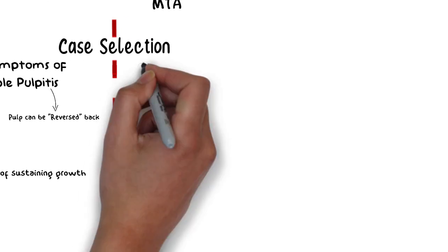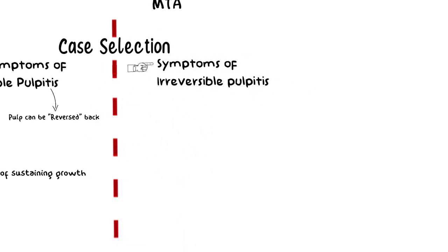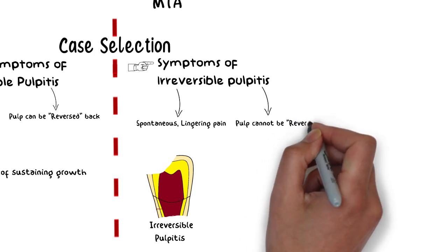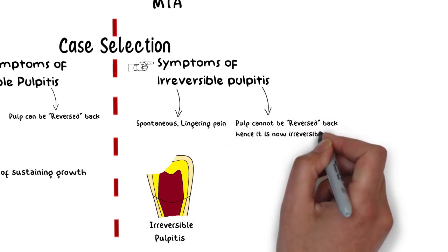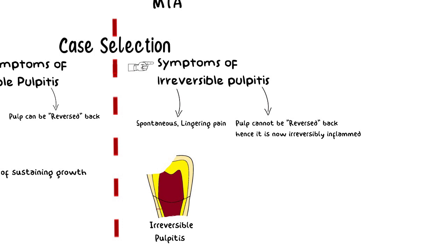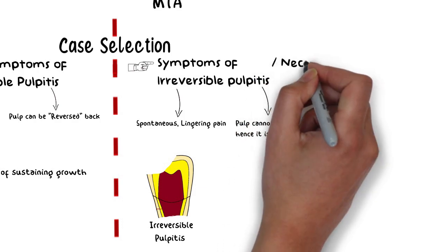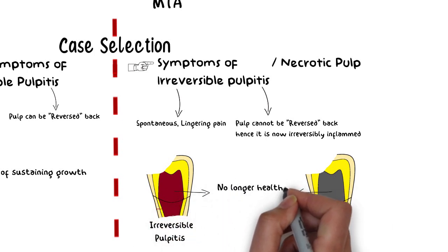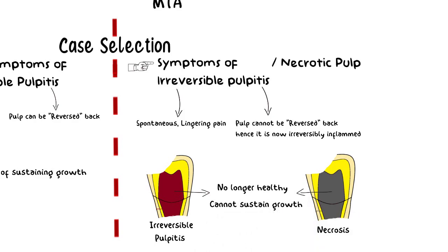But if the tooth prior to exposure had symptoms of irreversible pulpitis — such as spontaneous and lingering pain, which are the classical symptoms of irreversible pulpitis — then attempting Apexogenesis is useless, since the pulp will eventually go into a necrotic state regardless of whether the irritants are removed or not. That is why it is known as irreversible pulpitis: the condition of the pulp cannot be reversed back to a normal healthy pulp. For the same reason, Apexification rather than Apexogenesis is the recommended treatment option for teeth with necrotic pulps.